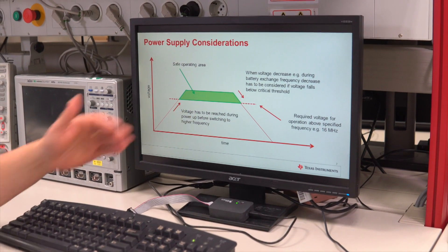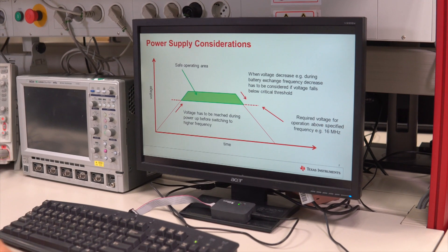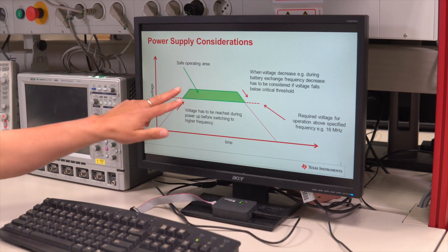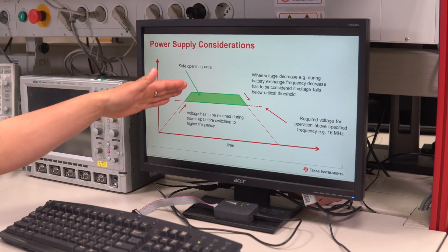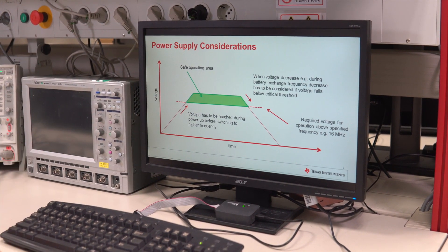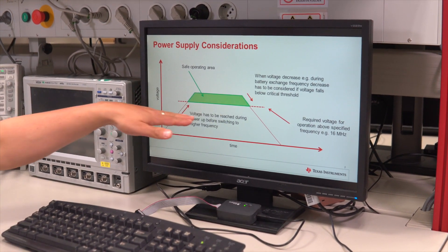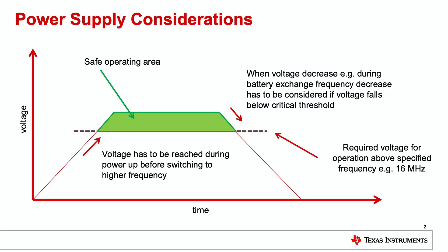In this simplified voltage versus time power supply sequencing chart, the safe operating area is marked green. It means that within a certain time during voltage ramp-up the part should not operate above a maximum defined frequency. In this example, this threshold is given by the CPU clock requirement of 16 megahertz above 3.3 volts.